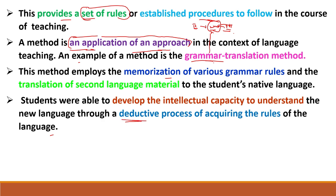Coming to deductive — what is the deductive method? Deductive means rules first. In grammar translation, rules are taught first and then examples next. If you come to the inductive method, examples come first and then rules next.